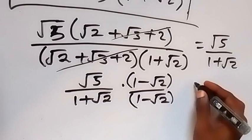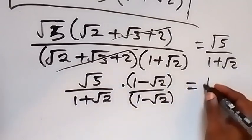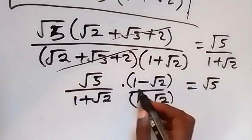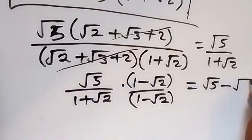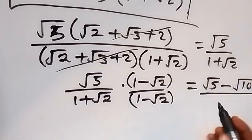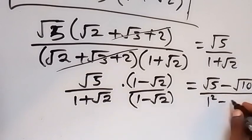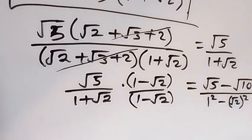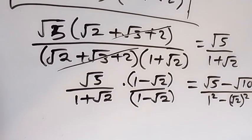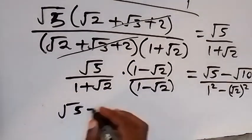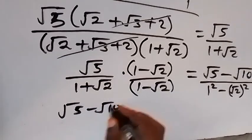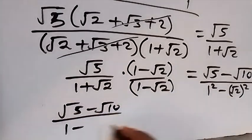Expanding the numerator: root 5 times 1 gives root 5, minus root 5 times root 2 gives root 10. For the denominator, since these are conjugates, we apply the identity: 1 squared minus root 2 squared, giving 1 minus 2.